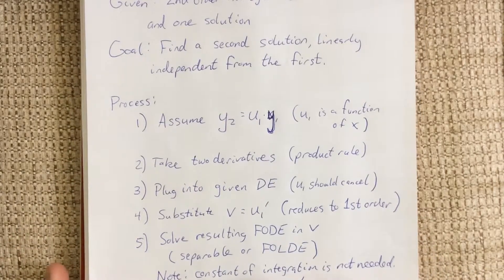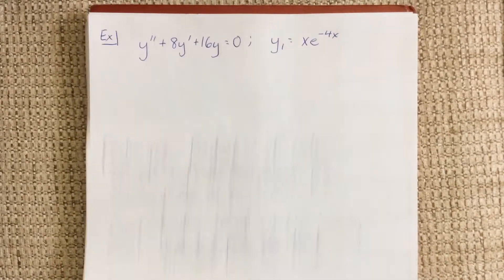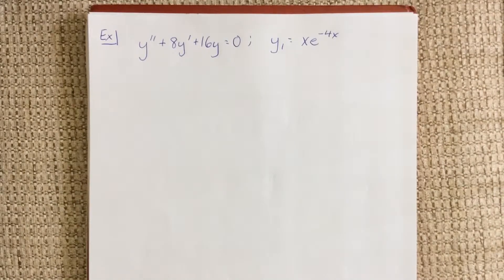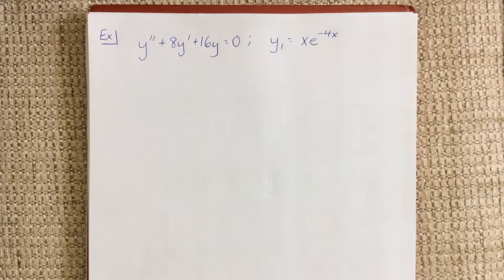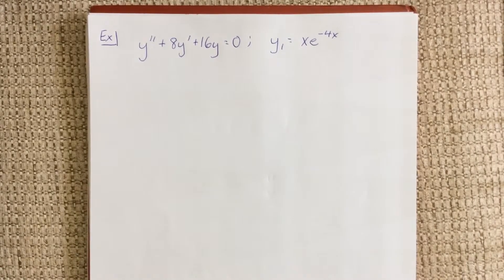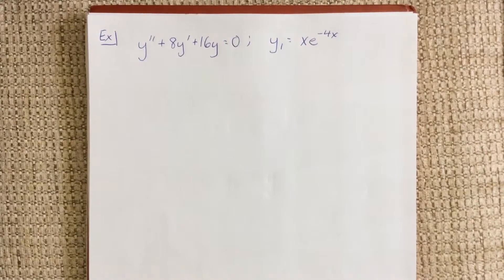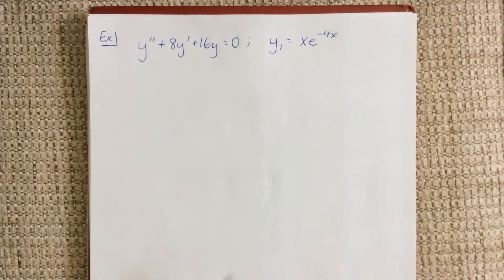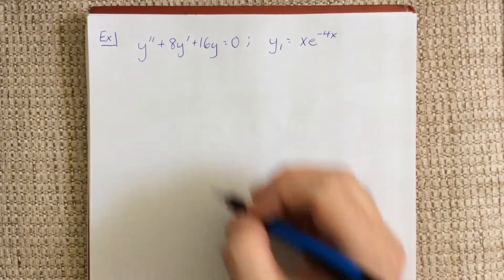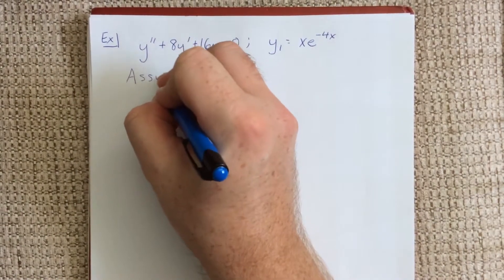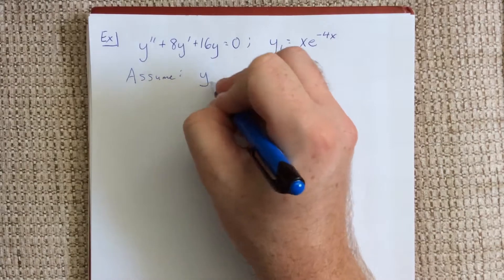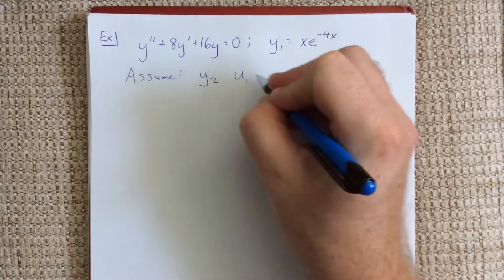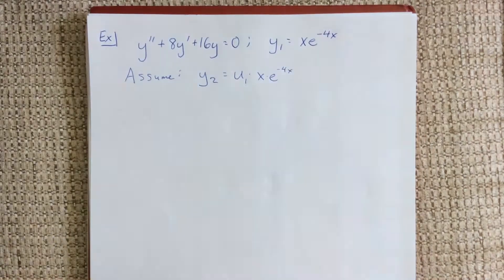The problem that I'd like us to try this process out with is the following: y double prime plus 8y prime plus 16y is equal to 0, and we've been given that the first linearly independent solution is x times e to the negative 4x. If you'd like to verify this for yourself, go ahead and pause the video and take a couple derivatives of x times e to the negative 4x and plug them in. According to our process, the first assumption we make is that the second solution is going to be some function u1 times our first solution.